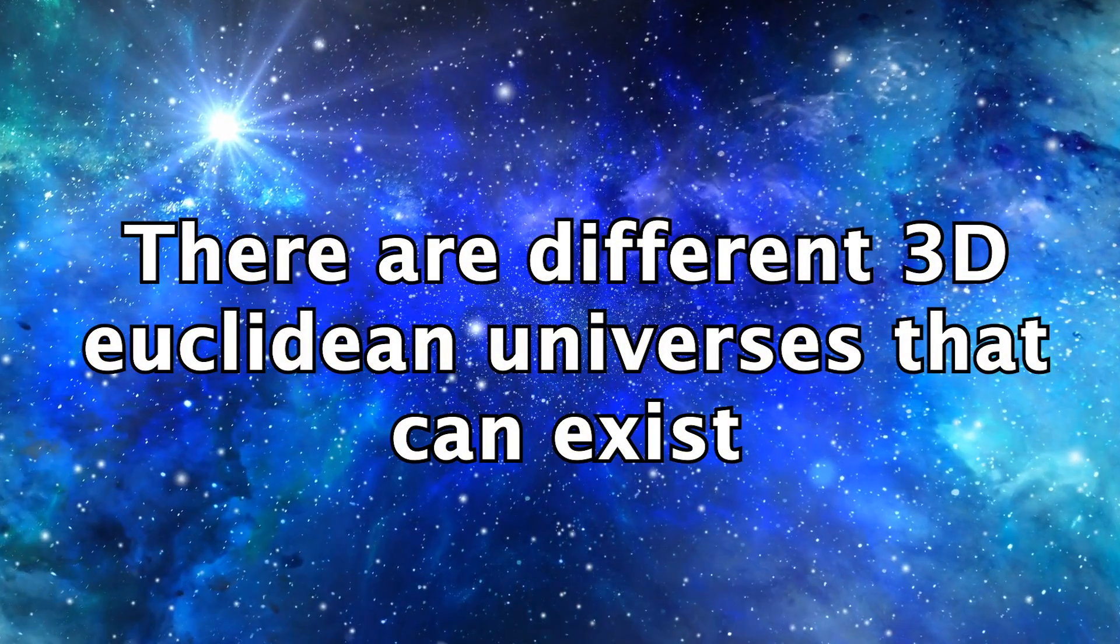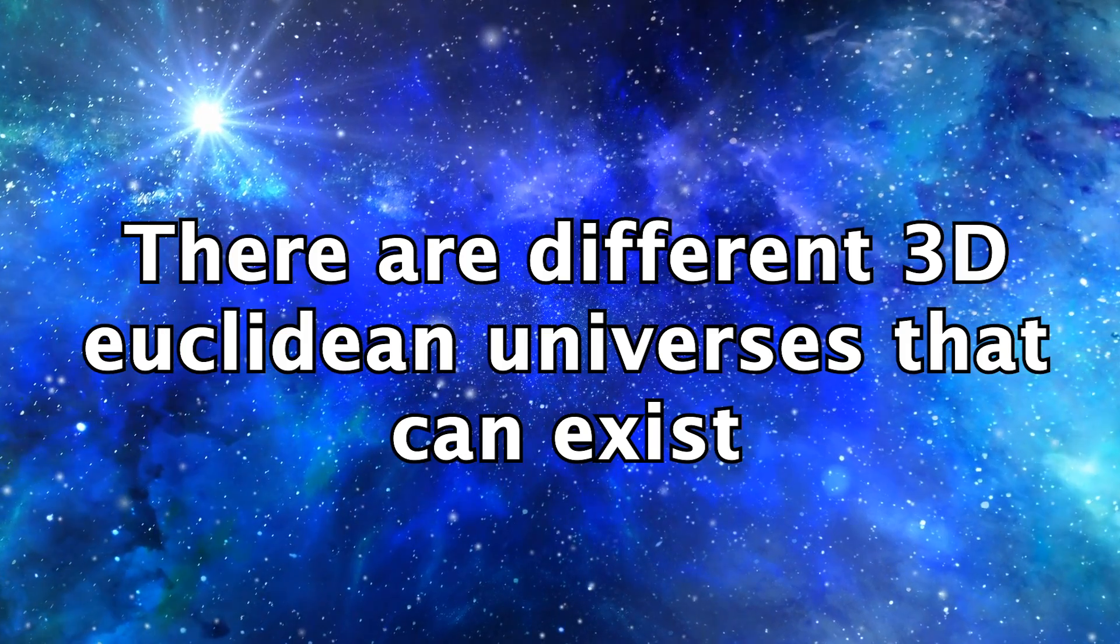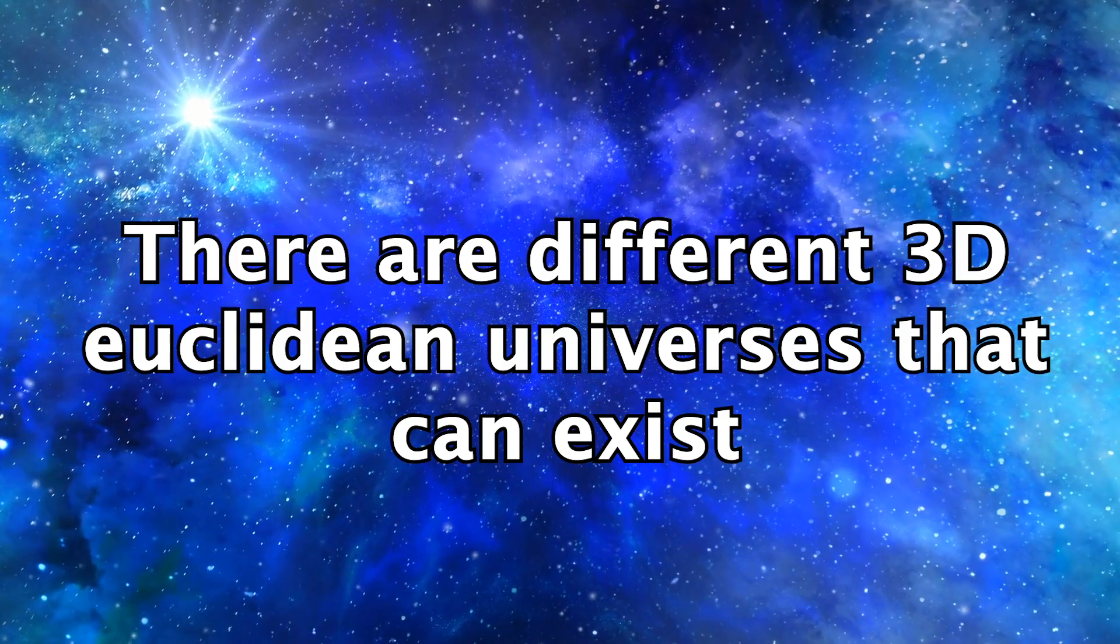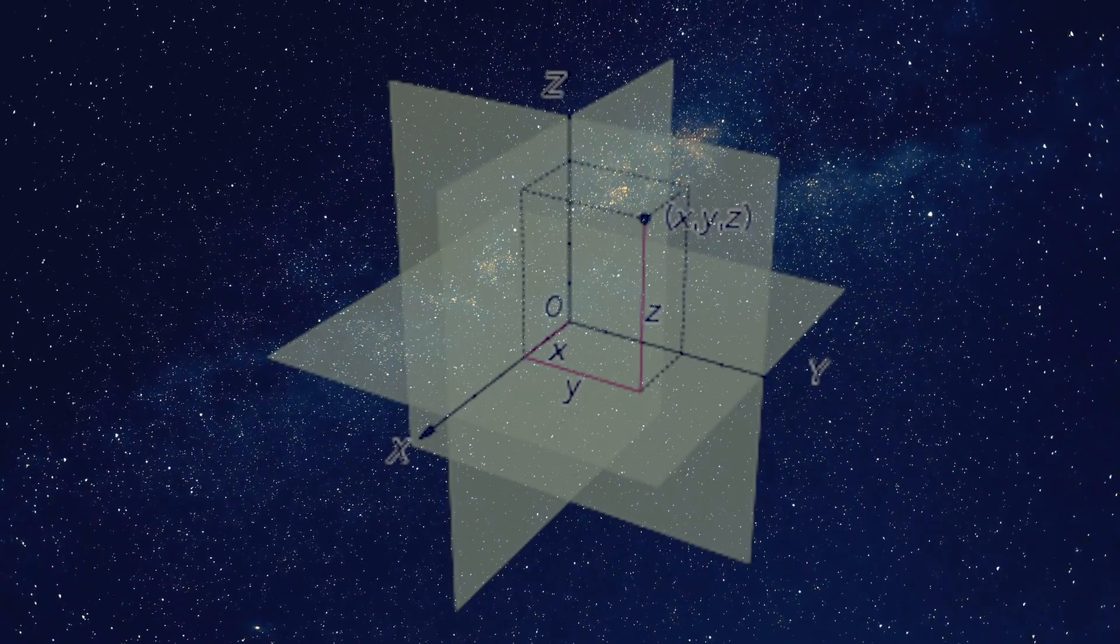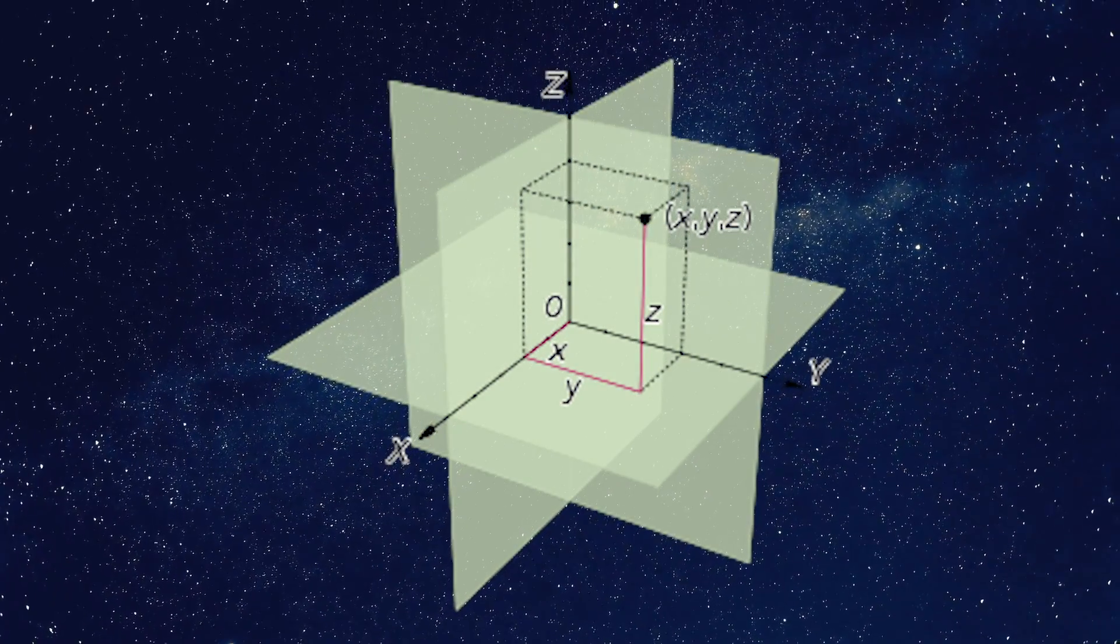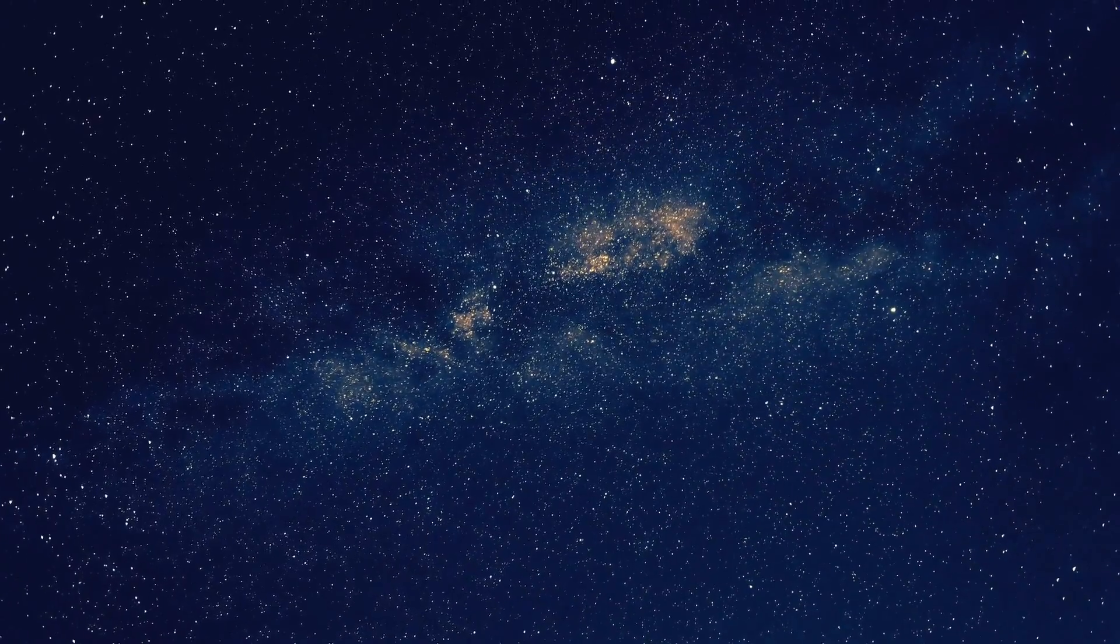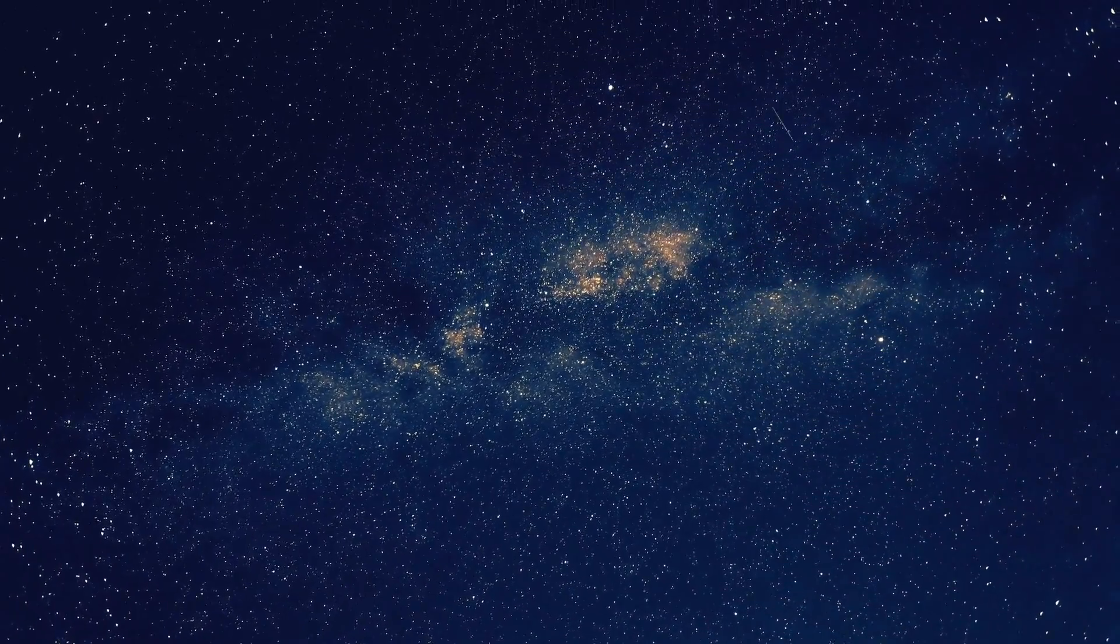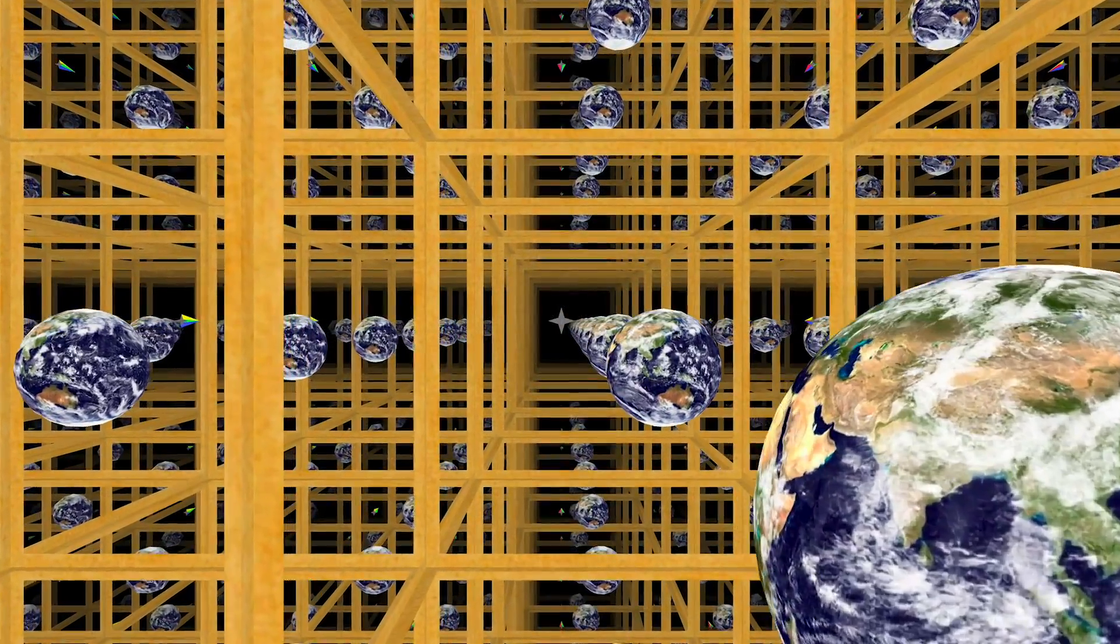Or, put more mathematically, there are different Euclidean three manifolds that exist. To be exact, there are 18 of them. One is just Euclidean space, which is the first thought for most people. Infinite in all directions, with zero curvature. But an example of one universe that isn't infinite would be the three torus. Because remember, it's just a single cube.